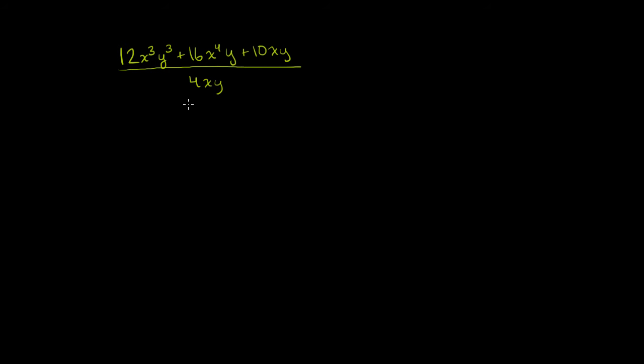There are several ways to think about this. They're all equivalent. This is going to be the exact same thing - we can essentially separate the numerators. This is the same thing as 12x to the third, y to the third, over 4xy, plus 16x to the fourth, y, over 4xy, plus 10xy over 4xy.